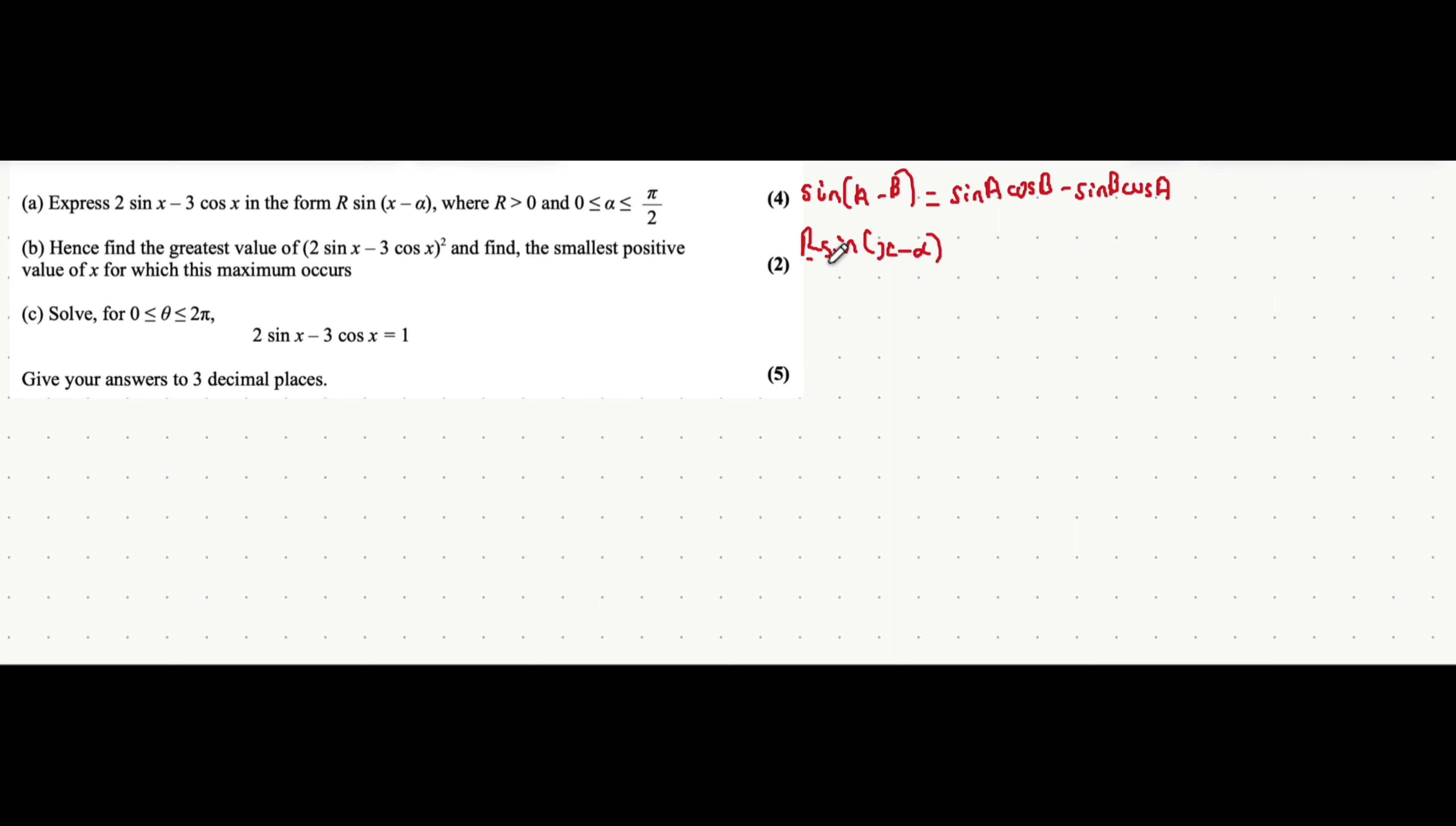The R, how we deal with that is we just multiply R into each individual term that we get on the right hand side. The reason we do that is so that we can then compare it to this expression here. But that's for later. Okay, so first of all, sine A cos B would be sine X cos alpha. So let's write R sine X cos alpha because we are multiplying it by R. And then take away sine B cos alpha which is sine alpha cos X. But again multiplying by R we get R sine alpha cos X.